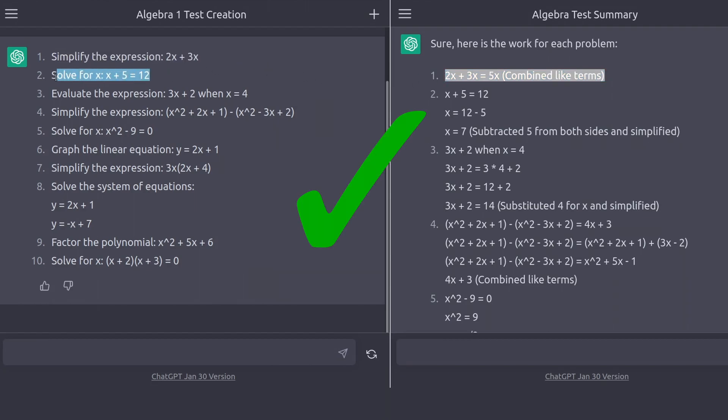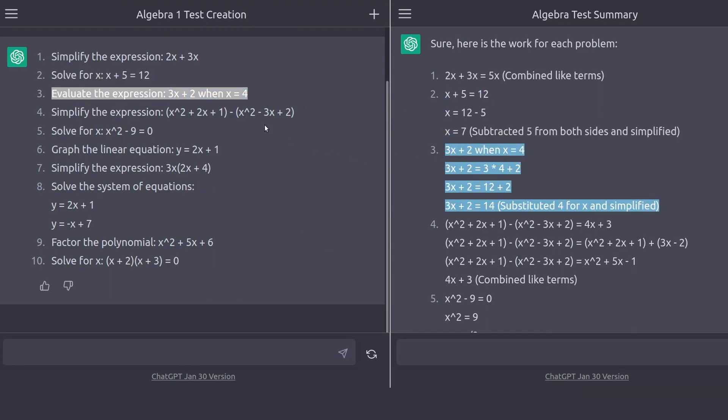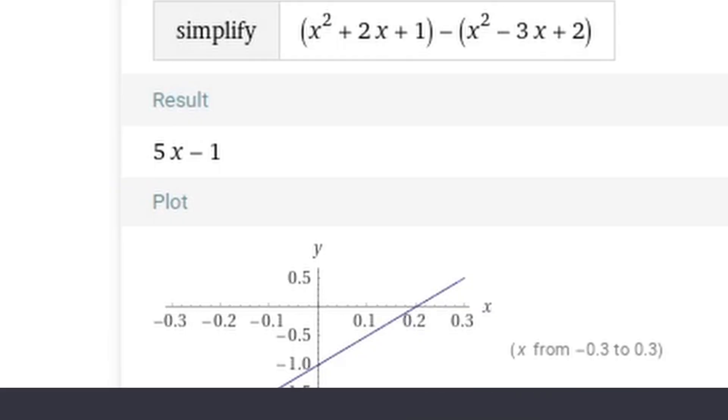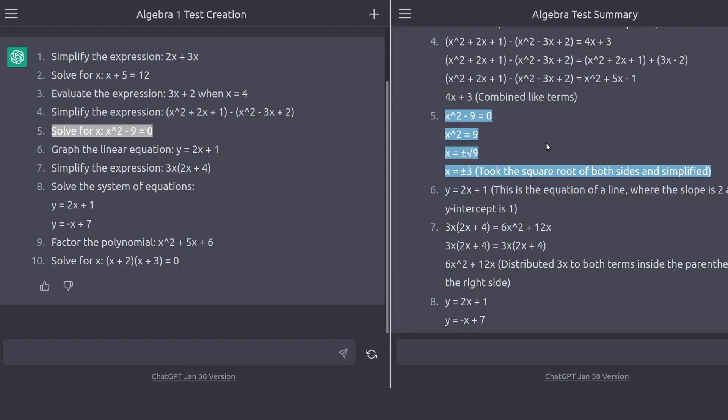Number 1, that's correct. Number 2, that's right. Number 3, that's right. Number 4, combined like terms? This just looks wrong. I don't know, I forgot how to do it, so I'll check. Okay, yeah, it was wrong. Number 5 is right.